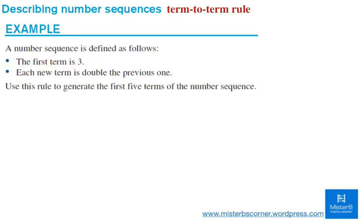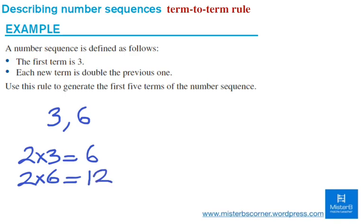A number of sequences is defined as follows. So, the first term is 3. Each new term is double the previous one. So, I will go like 2 times 3, I'm doubling 3, it's 6, so the next term will be 6, and then I will double 6 to get 12, so the third term will be 12, and then I will double 12 to get the fourth term, which will be 24, and this goes on forever until I'm bored.